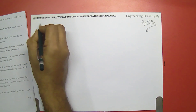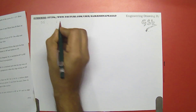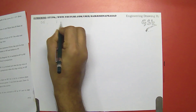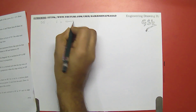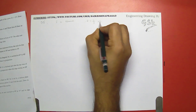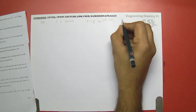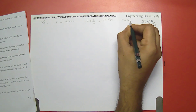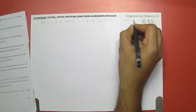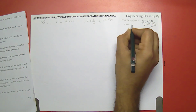Let us write down the given data: D-D dash to focus distance is 60 mm, eccentricity is 2 by 3 — that is an ellipse — and the tangent and normal should be drawn at 40 mm from D-D dash.